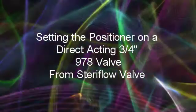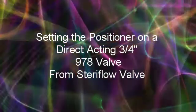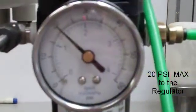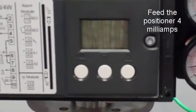This is the positioner setting on a direct acting 3/4 inch 978 valve from Steriflow Valve. Send 20 PSI to the regulator. Feed 4 mA to the positioner.